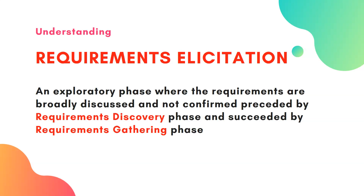Requirements elicitation is preceded by the requirements discovery phase and succeeded by the requirements gathering phase. So it is not the starting phase — before it is the requirement discovery phase, where we do lots of document analysis. This helps us elicit the right requirements from the right stakeholders. It is succeeded by the requirement gathering phase, where whatever was broadly discussed during elicitation is translated into documents like functional specification documents, business requirement documents, or smaller artifacts like screen mockups, process flows, UML diagrams, and data dictionaries.